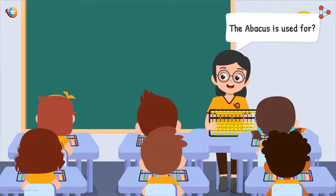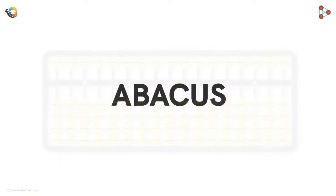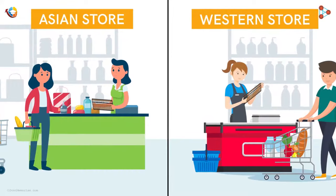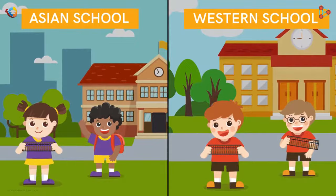Now, can you tell me what the Abacus is used for? That is correct Ray! Abacus is used for Calculation. It's an ancient calculating device that helps us to calculate faster using visualization techniques. It's used in many Asian and Western stores. Not only that, but it's also taught in many Asian and Western schools.